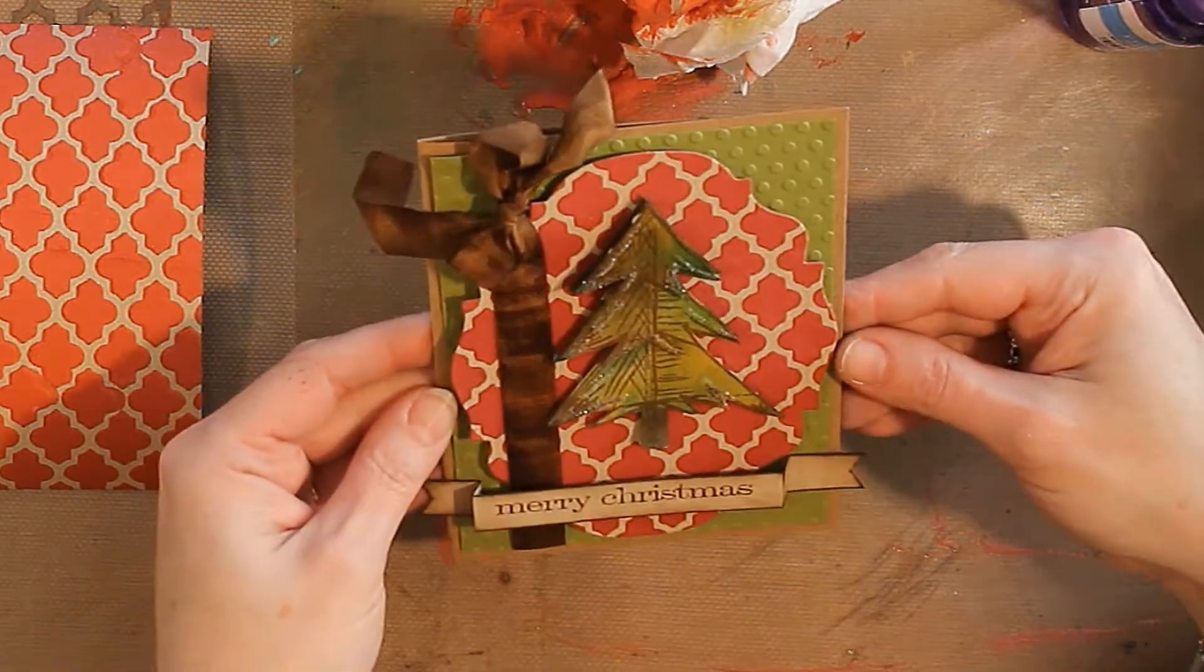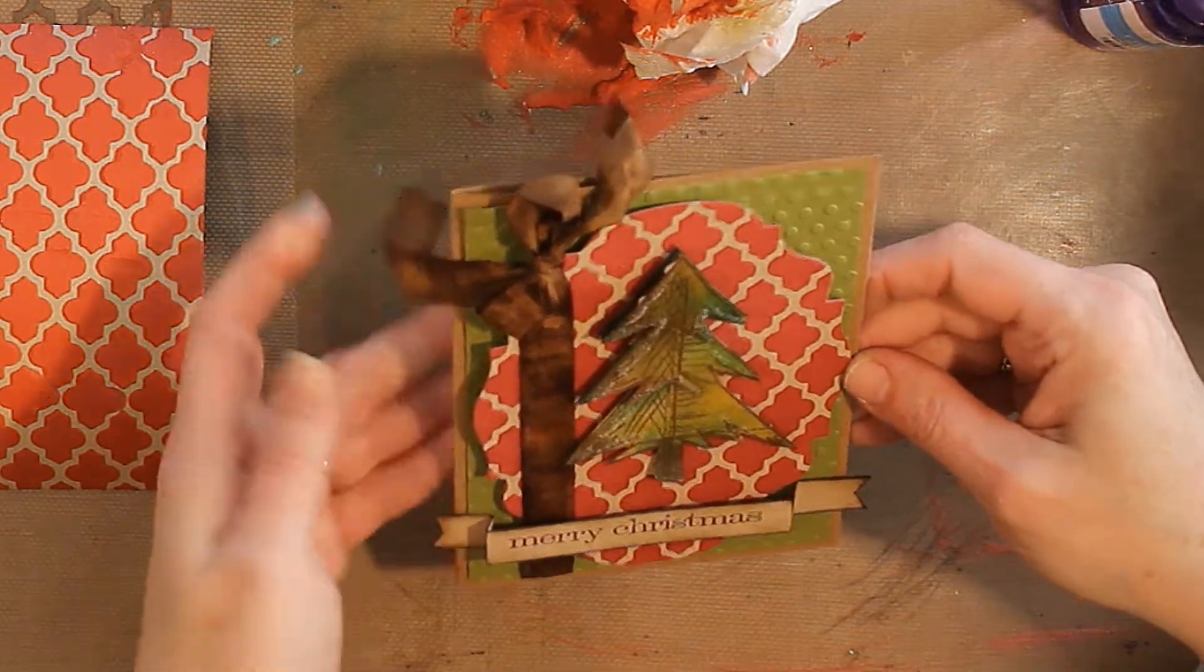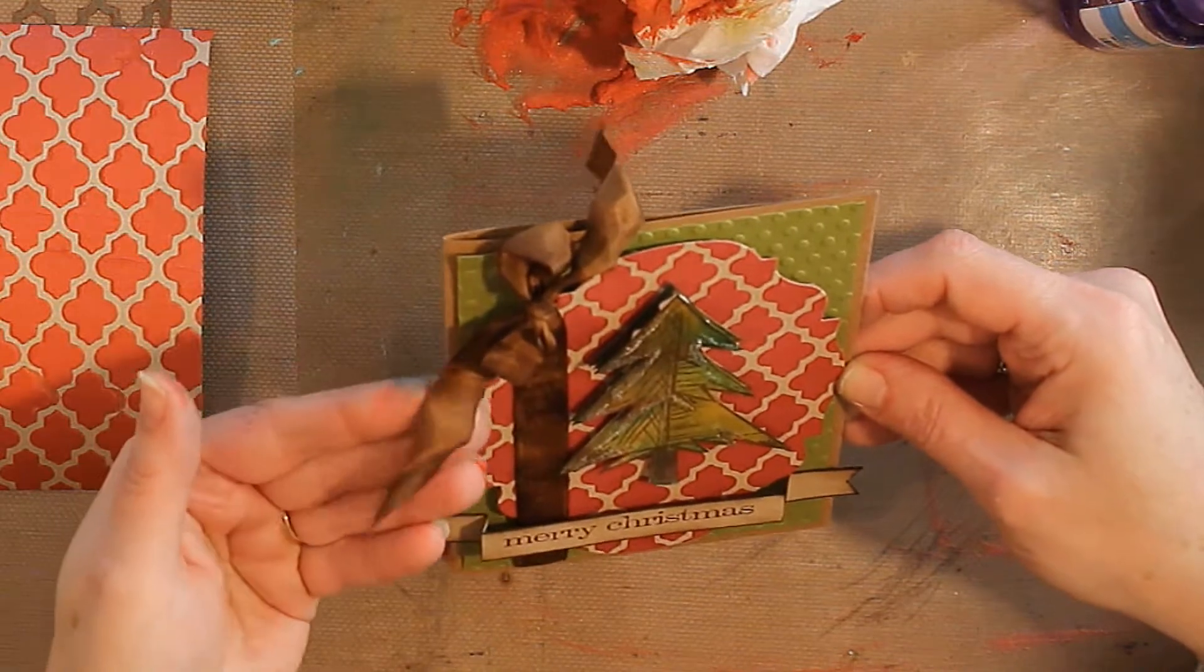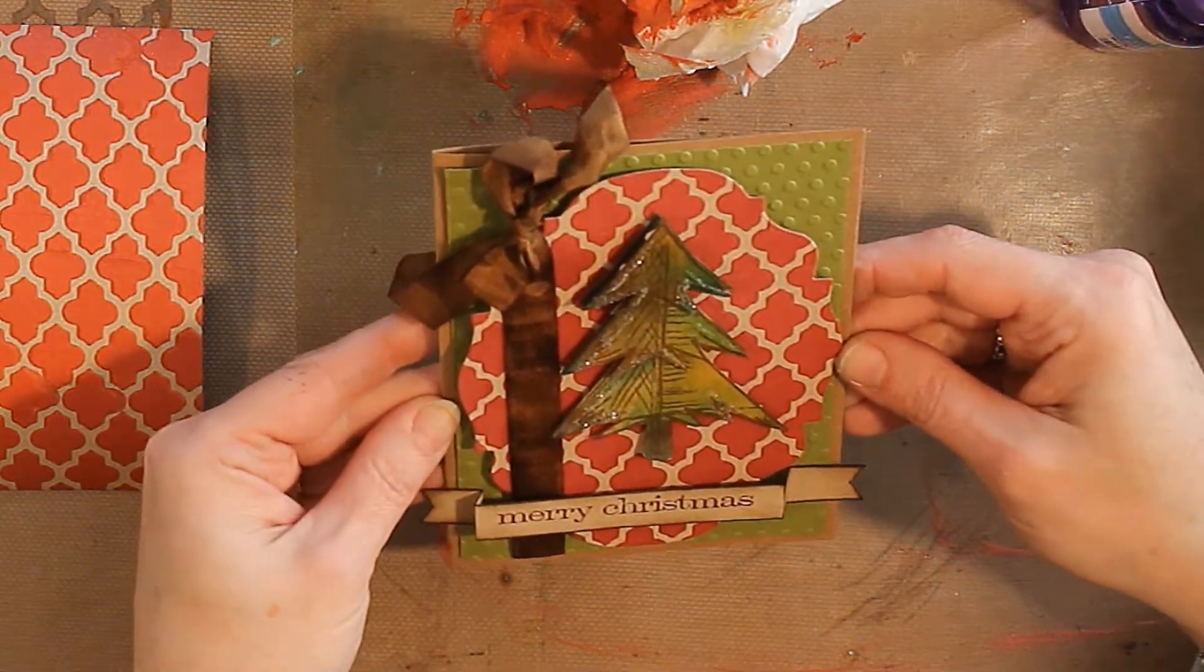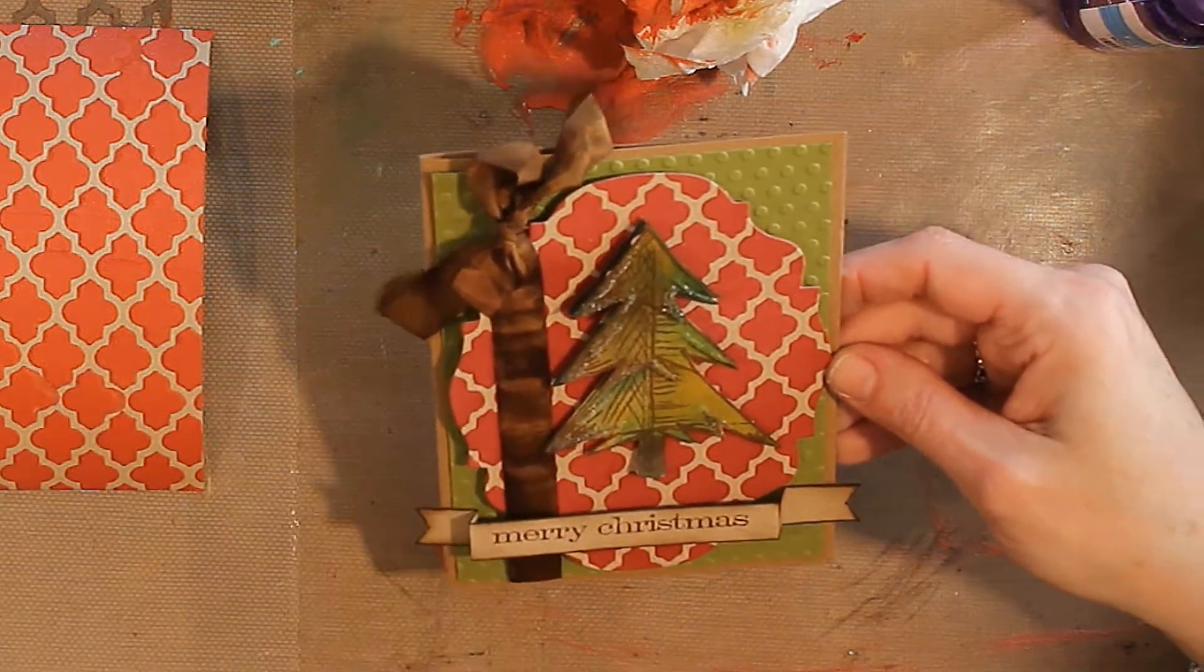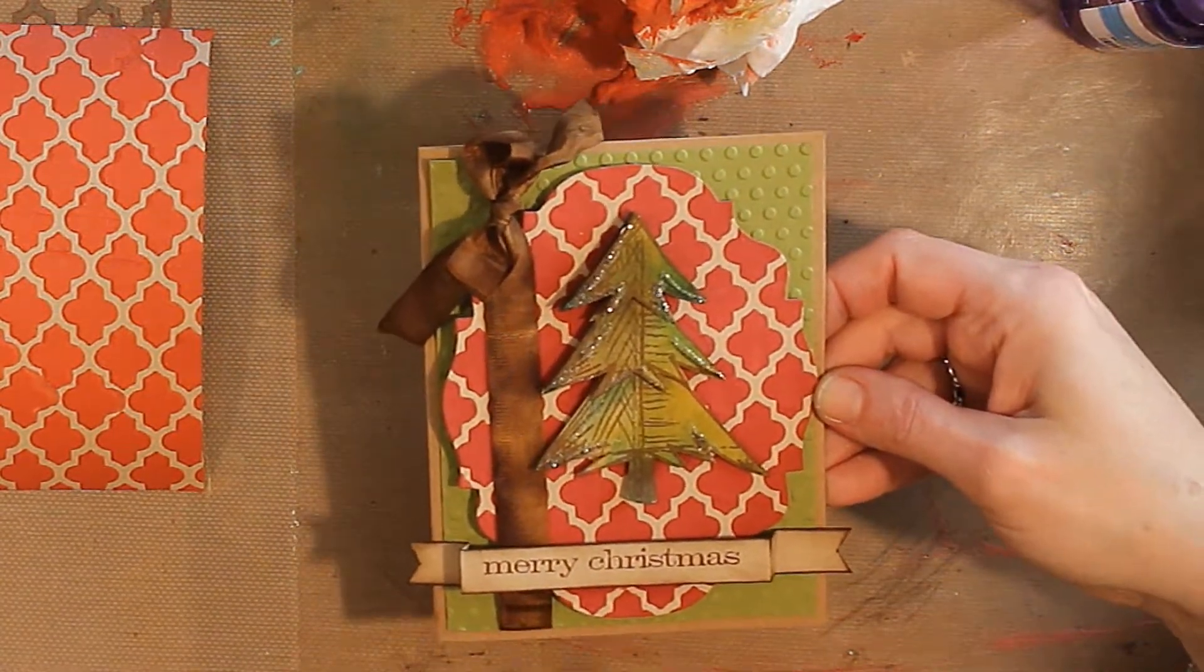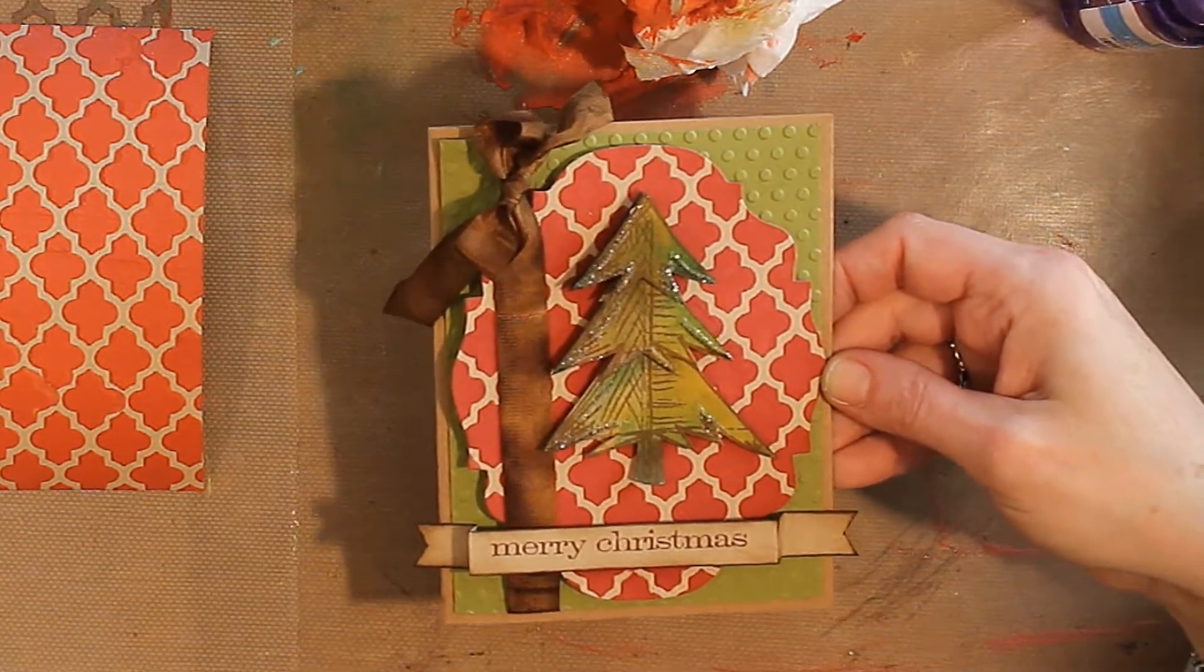Popped those up with pop dots. I added an embossed background. I used some of the scene binding like we've used in our other videos. This I colored with walnut stain distress ink and added a sentiment. So another way to use embossing paste and customize to match your card.